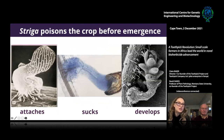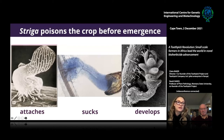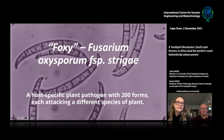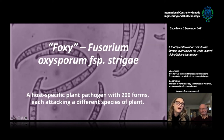We have to act fast to tackle striga. Within 72 hours of a crop being planted, striga seeds in the soil will germinate due to hormones put off by that crop — it attaches, sucks, and develops quite quickly. This is why we're focused on developing a live inoculum that is also active immediately. We're using Fusarium oxysporum forma specialis strigae.